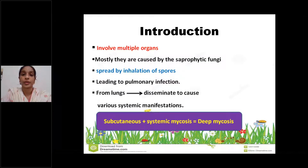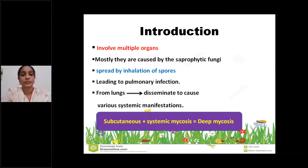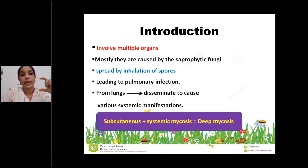This definition of dimorphic fungi is very, very important for two-mark viva questions with examples. All systemic mycological infections are caused by a group of dimorphic fungi. All of these are saprophytic fungi — they exist in nature and are widely distributed in soil and in the form of spores. The common route of transmission is inhalation of spores, and all systemic infections primarily lead to pulmonary infection.